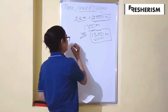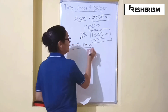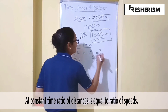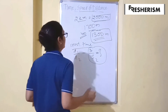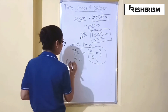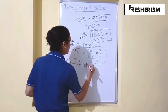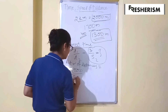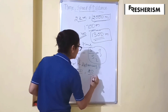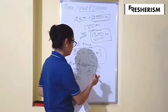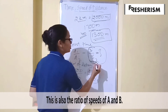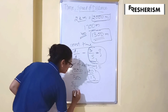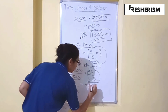We know that at constant time, the ratio of distances D1 by D2 is equal to the ratio of speeds. The ratio of distances traveled by A and B is 2000 divided by 1300, that is 20 by 13. This is also equal to the ratio of speeds of A and B. So the ratio of speeds of A and B is 20 ratio 13.